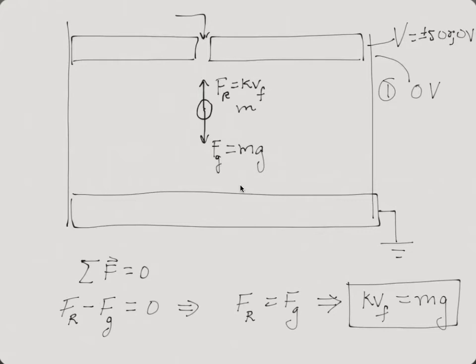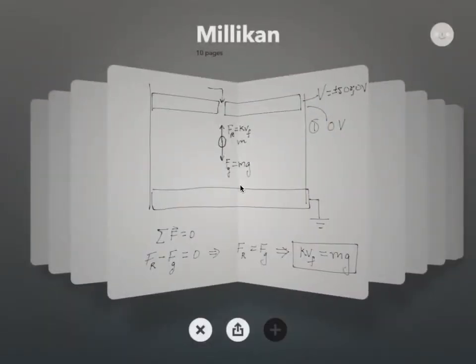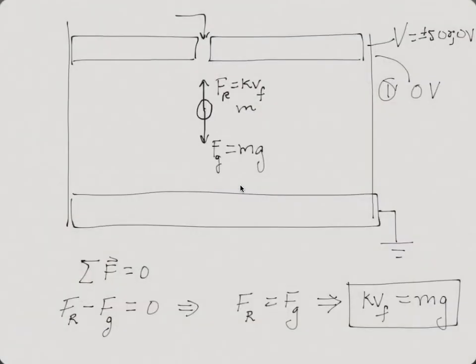And notice we are utilizing Newton's universal law of gravitation. Einstein is nice, but Newton still works. So let's continue right on. And we're going to consider the same scenario when the voltage is 500.